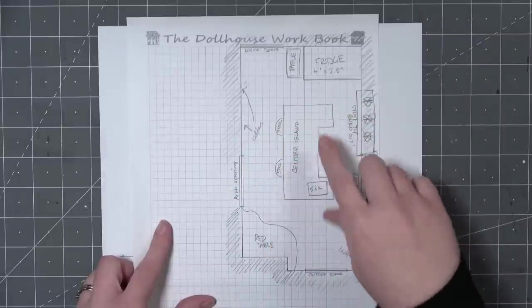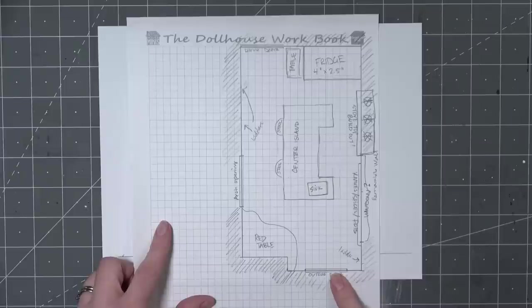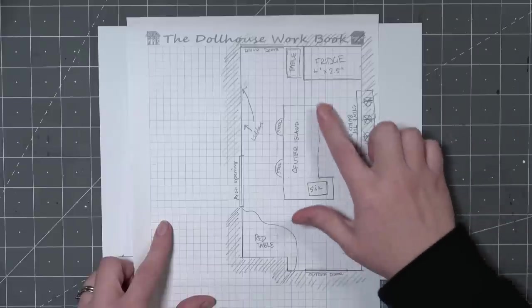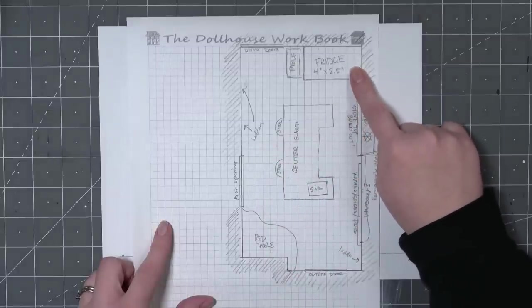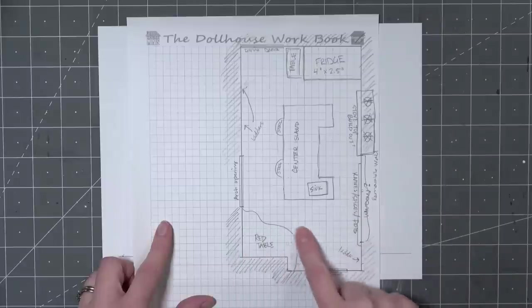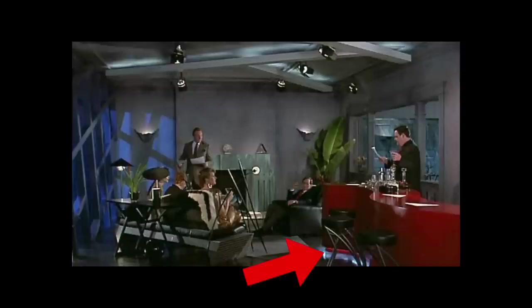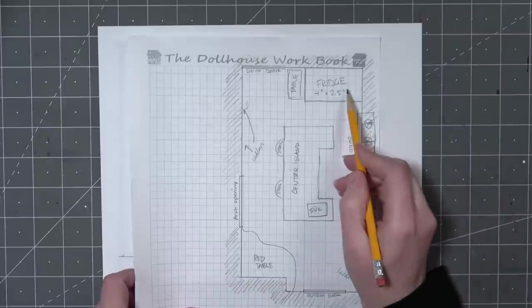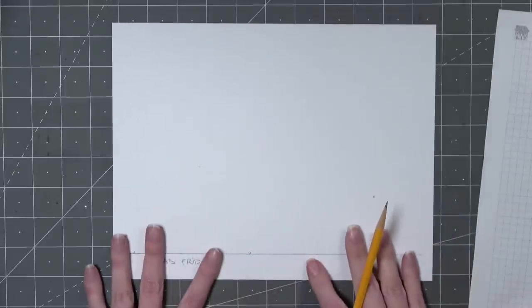To begin, I drew out the floor plan of the Beetlejuice House Kitchen. I made sure to include all of the doorways and the magnetic panel that is removable on one side. Two of the major pieces in this room are the large kitchen island and the very modern refrigerator that you see Delia open in the movie. There is also a strange red countertop in the background behind Lydia. The most important information I got from this process was the footprint size of the fridge, which is going to be four inches by two and a half inches.